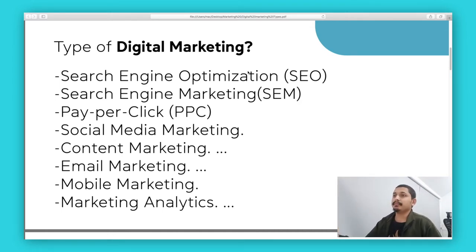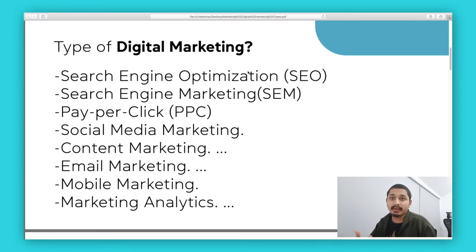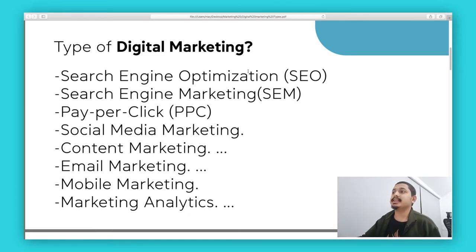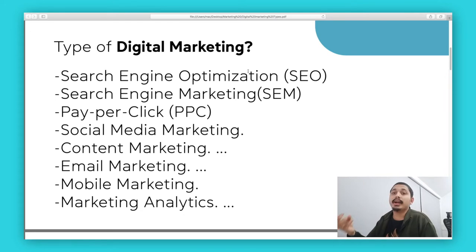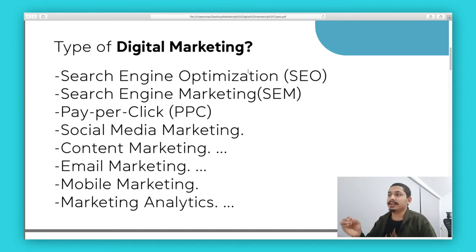First is Search Engine Optimization — SEO. SEO is about optimizing your page to rank on search engines. Next is SEM, Search Engine Marketing, where you buy ads for particular keywords to market through the search engine.